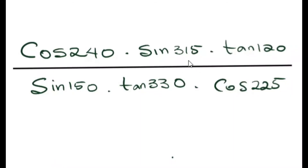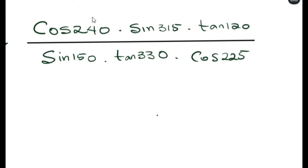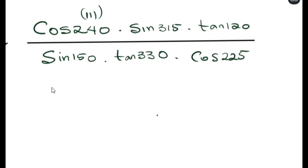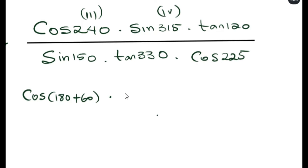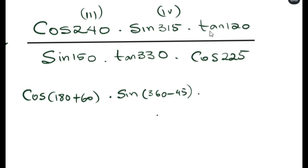The expression is: cos 240 times sine 315 times tan 120, over sine 150 times cos 330 times cos 225. For cos 240, since 240 is in the third quadrant, we rewrite it using the equation 180 plus x. For sine 315, since 315 is in the fourth quadrant, we rewrite it using the fourth quadrant equation. For tan 120, since 120 is in the second quadrant, we rewrite it using the second quadrant equation.